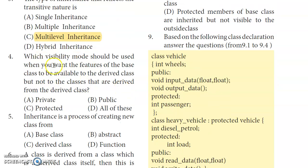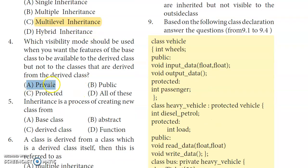Fourth question: Which visibility mode should be used when you want the features of the base class to be available to the derived class but not to the classes derived from the derived class? In private visibility mode, everything defined as private stays private. Protected and public members when defined become private in the derived class. So the correct answer is Private visibility mode.